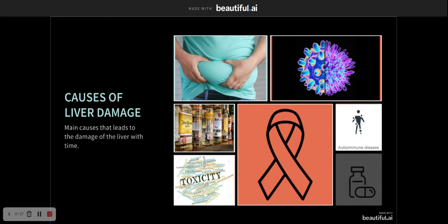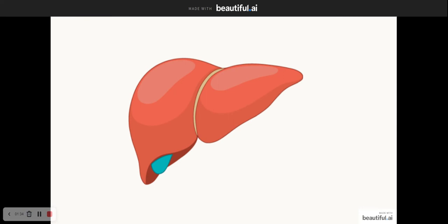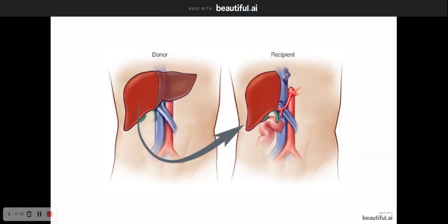In reality, the liver is an organ that has multiple functions, many of which cannot be replaced by a machine. The most effective treatment for liver damage is a liver transplant.